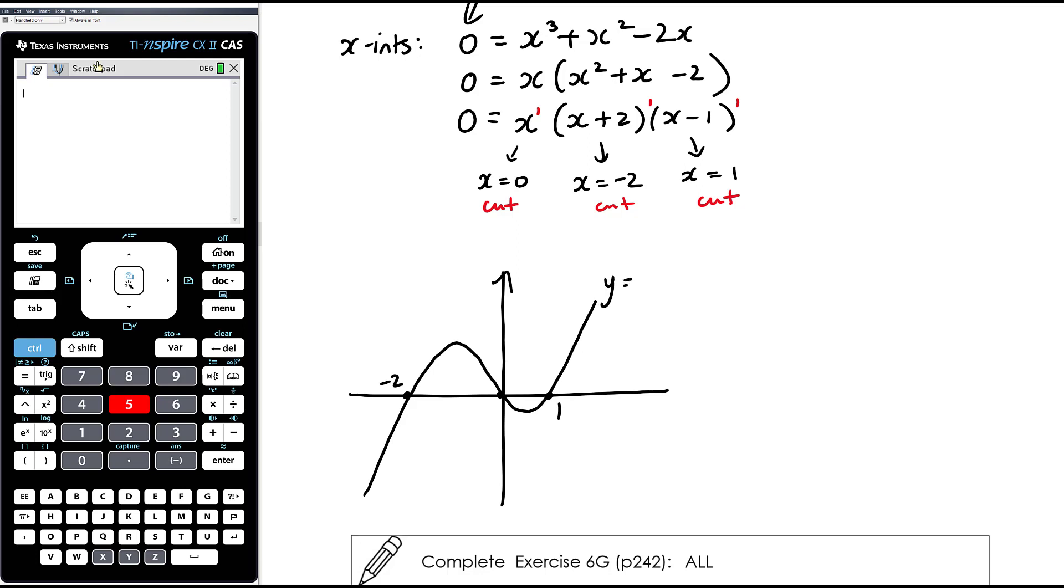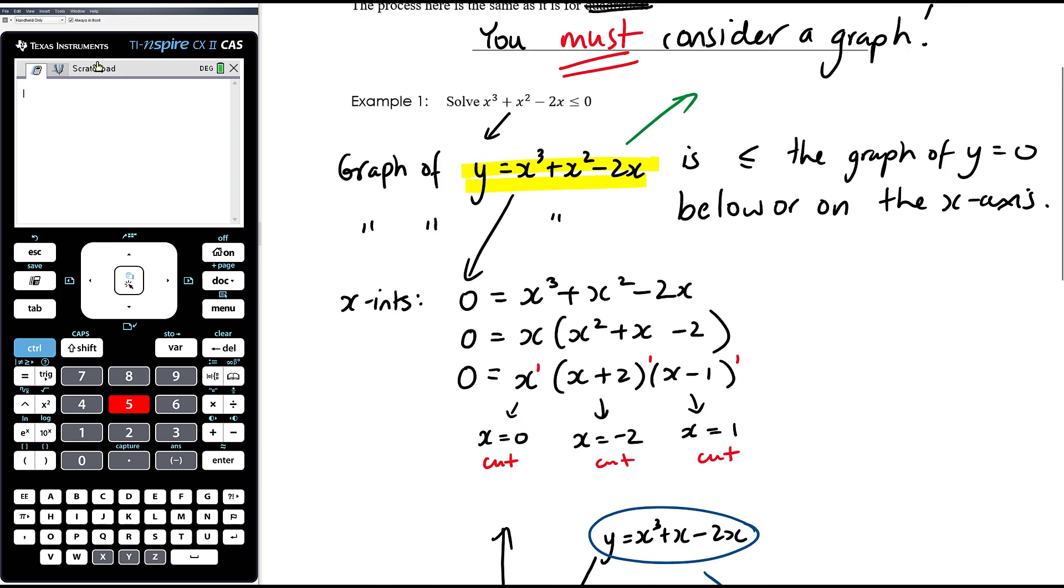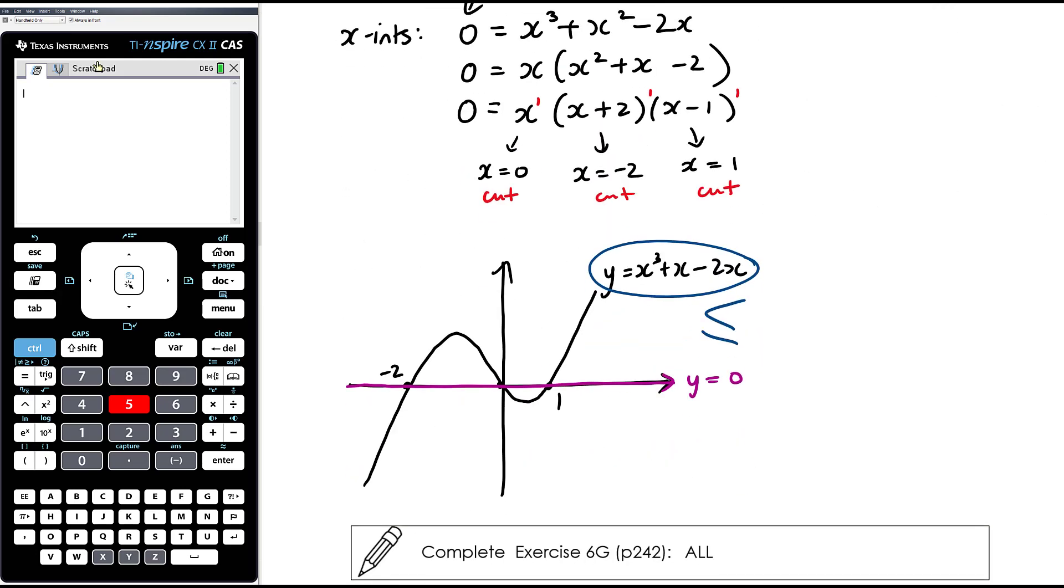So this is the graph of y equals x cubed plus x squared minus 2x. This is the graph here of y equals 0, and we want to know where this is less than or equal to this. So we want to know where that cubic is on or below the x-axis. So that is going to be down here and down here. But the question is, for what x values, we're solving for x, what x values make the cubic on or below the x-axis?